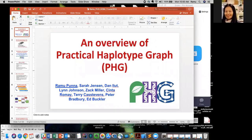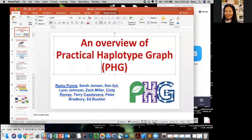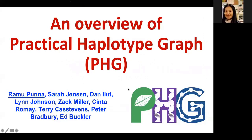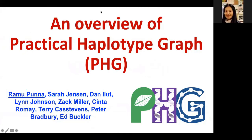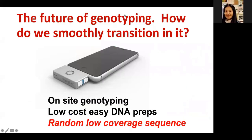Good afternoon everyone, welcome to June Gobi Monthly Seminar. Today we have the honor to have Dr. Ramu Puna from Dr. Ed Buckler's lab to present an overview on the Practical Haplotype Graph. Last week they had 40 participants from five continents at Cornell for a successful whole-week training. Dr. Ramu is a genomic selection application coordinator and project manager for the genomic selection by sequencing project, formerly a REMSEC project funded by the Bill and Melinda Gates Foundation.